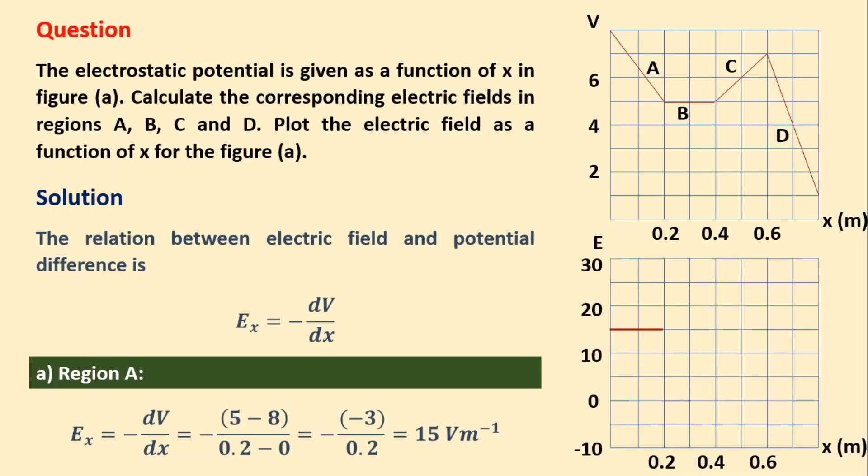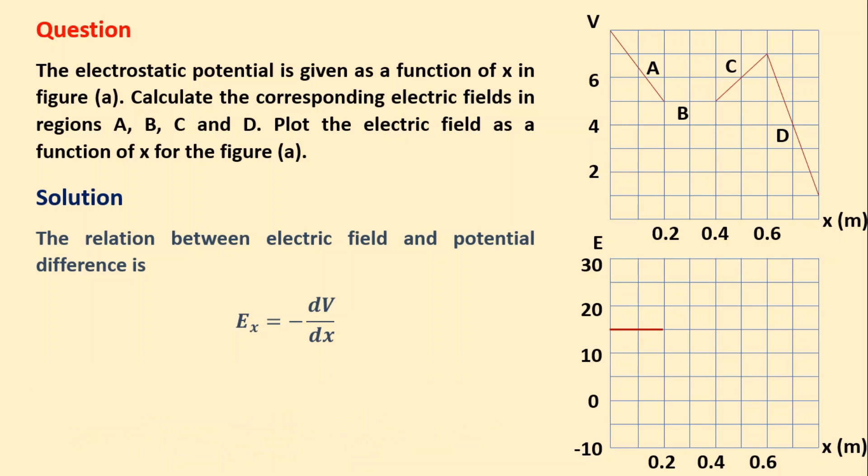So up to a distance of 0.2 meters, the electric field remains constant at 15 volts per meter.